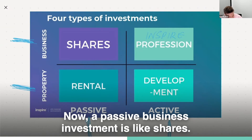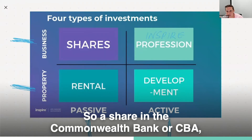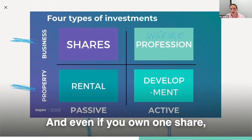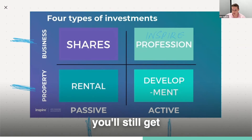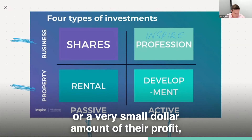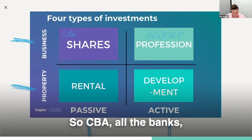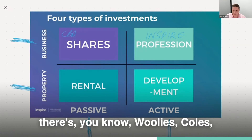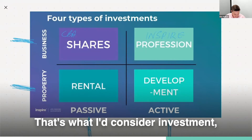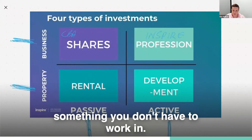A passive business investment is like shares. So a share in the Commonwealth Bank or CBA is actually owning a percentage of their business. And even if you own one share, you'll still get a very small percentage — or a very small dollar amount — of their profit paid to you each year. So CBA, all the banks, Woolies, Coles — stuff you buy on the Australian Stock Exchange. That's what I consider a passive investment in a business, something you don't have to work in.